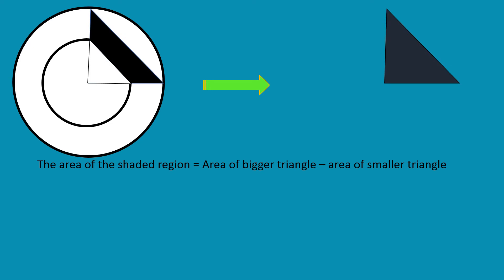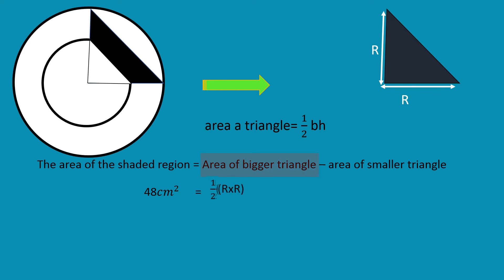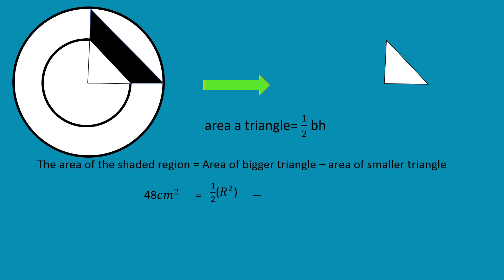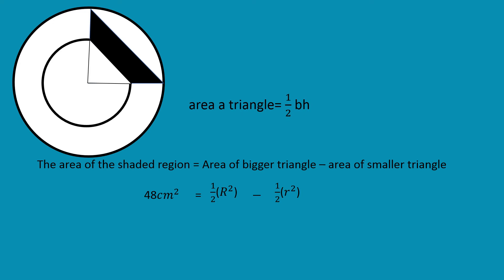The area of the shaded region is 48 square centimeters. Recall that to find the area of a triangle we multiply one-half times base times height. The area of the bigger triangle is one-half times R squared, and the area of the smaller triangle is one-half times r squared. Simplifying the equation: 48 equals one-half times the quantity R squared minus r squared, giving us 96 square centimeters equals R squared minus r squared.